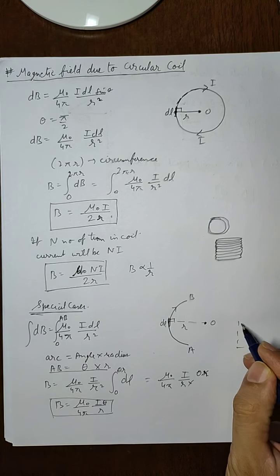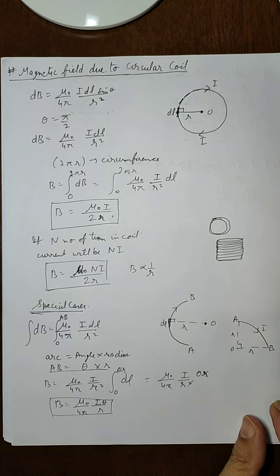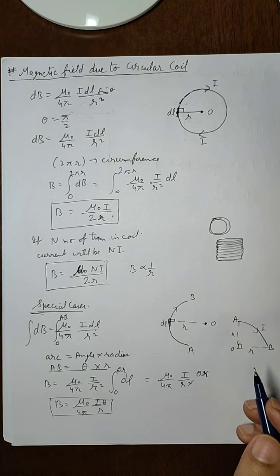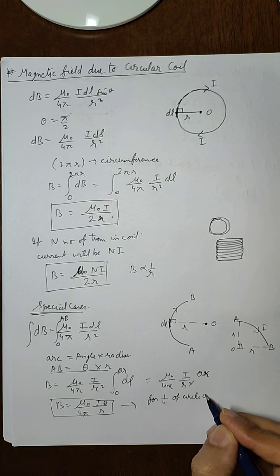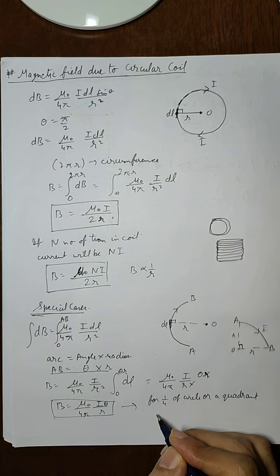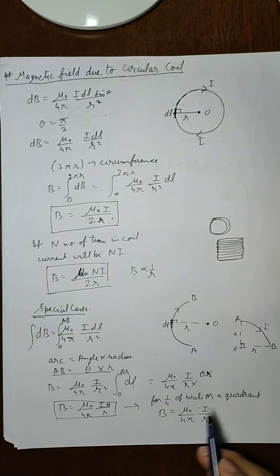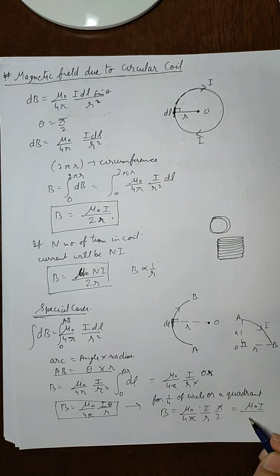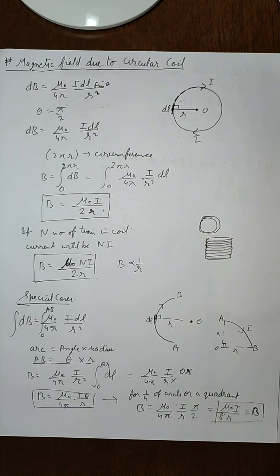Similarly, if the arc is a quadrant — one-fourth of a circle with center O — then θ = 90° = π/2. Applying the arc formula, B = μ₀/4π · i/r · π/2. The π cancels and the final expression becomes B = μ₀i/8r. This is the magnetic field at the center in the case of a quadrant. This way we can apply Biot-Savart's law to various geometrical figures.